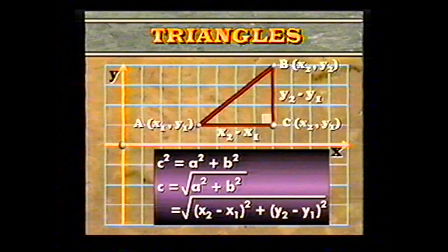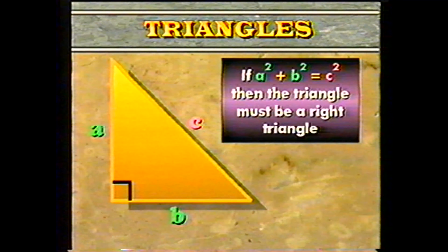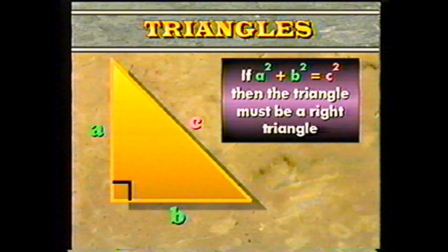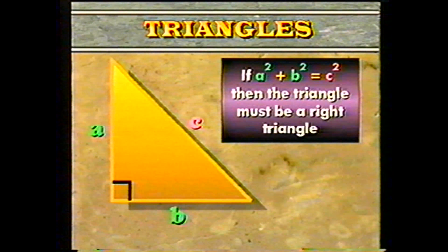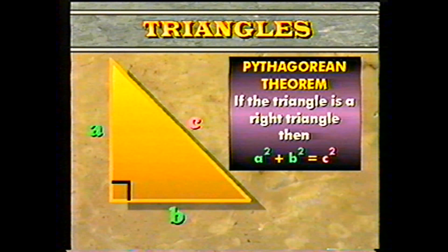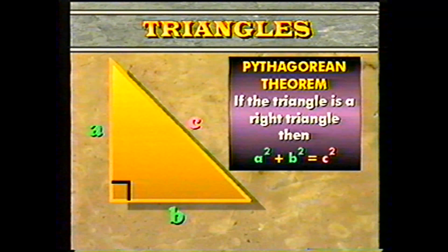Here's another theorem that relates to the Pythagorean theorem. If the three sides of a triangle are a, b, and c, and if a squared plus b squared equals c squared, then the triangle must be a right triangle. Notice that this theorem is not the same as the Pythagorean theorem — it is actually the converse. The Pythagorean theorem states that if the triangle is a right triangle, then the relation holds. The converse says that if the equation holds true, then the triangle is a right triangle.